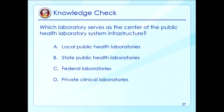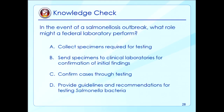Which laboratory serves as the center of the public health laboratory system infrastructure? The correct answer is B, state public health labs. In the event of a salmonellosis outbreak, what role might a federal laboratory perform? The correct answer is D — provide guidelines and recommendations for testing salmonella bacteria.